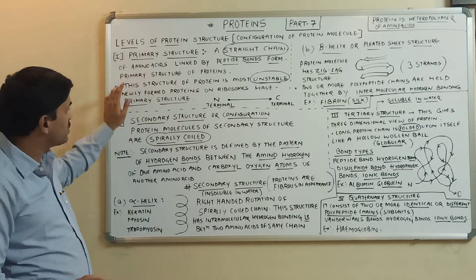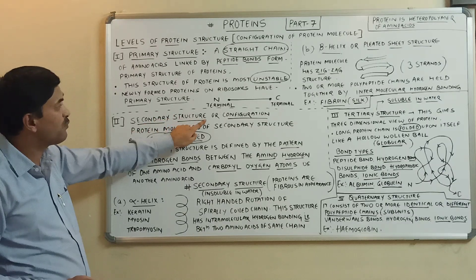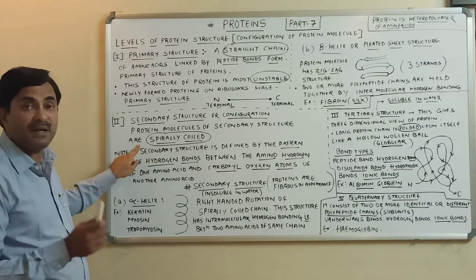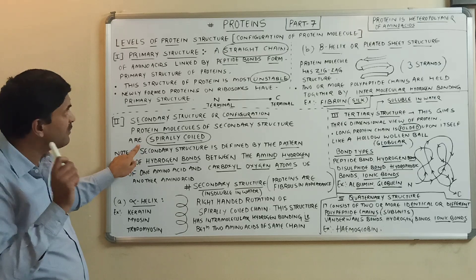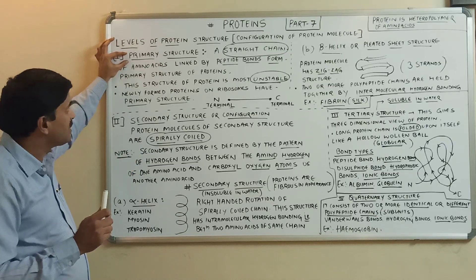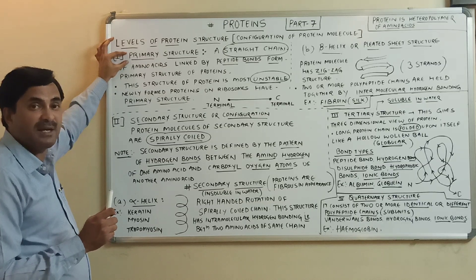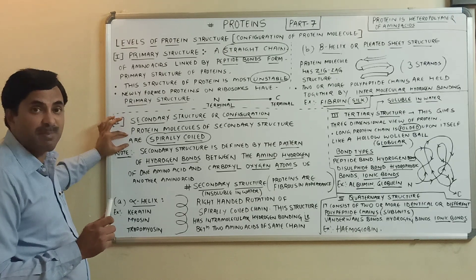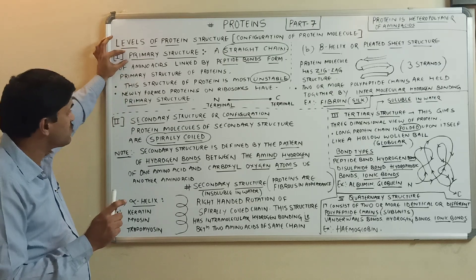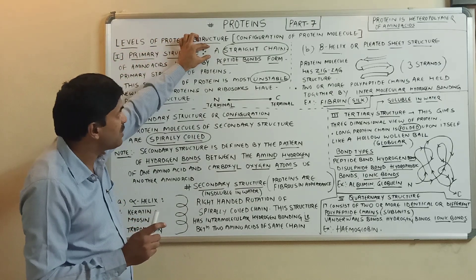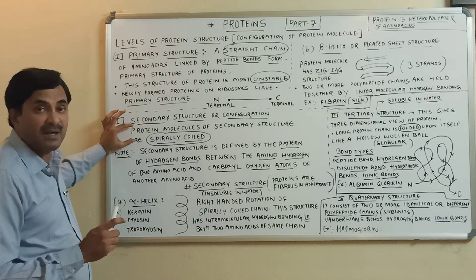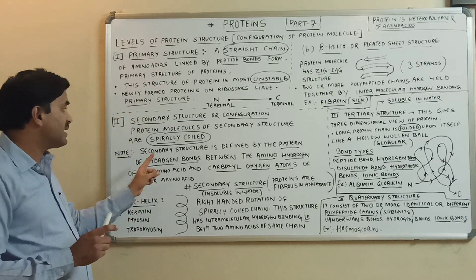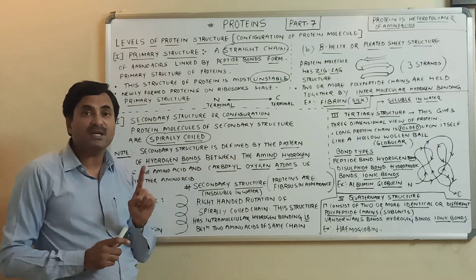Now, the secondary structure or secondary configuration of the protein: here the protein molecules are spirally coiled. The big difference is that in the primary structure, amino acids were found in a linear or straight chain, but in the secondary structure, the protein molecules are spirally coiled — it is not a linear chain.